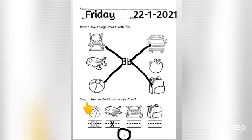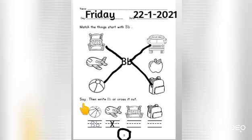Children, finger point, ready, point. Say, then write B or cross it out. Children, what is this? This is a picture of ball. B, B, ball. Now you need to trace the letter B.